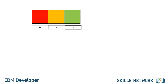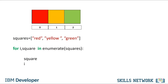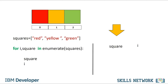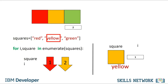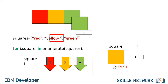This is the syntax to iterate through a list and provide the index of each element. We use the list squares and the names of the colors to represent the colored squares. The argument of enumerate is the list — in this case, squares. The variable i is the index and the variable square is the corresponding element in the list. For the first iteration, the value of the variable is red, corresponding to index 0. For the second iteration, the value is yellow, and the value of i is 1. We repeat the process for the last index.